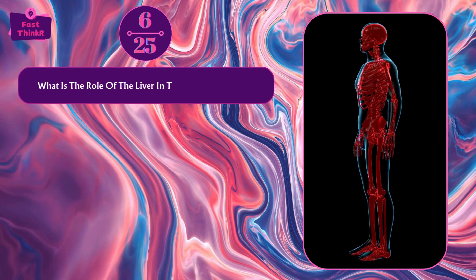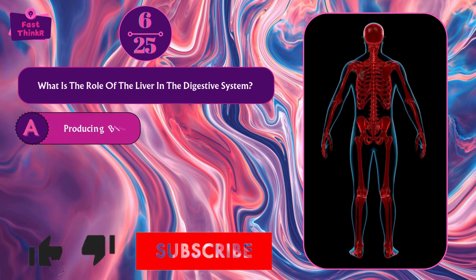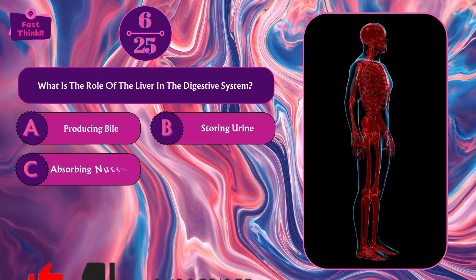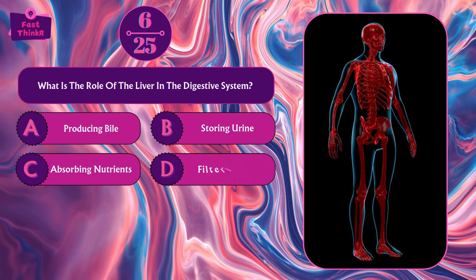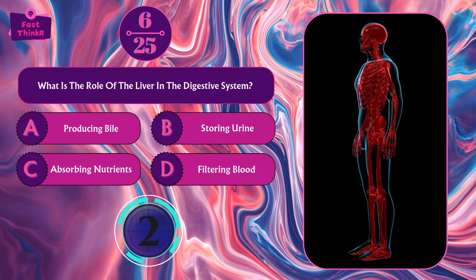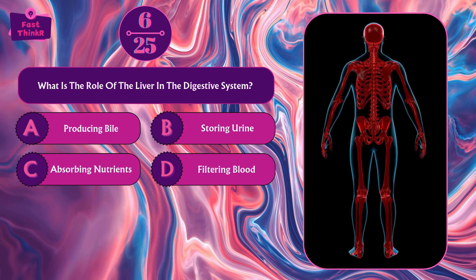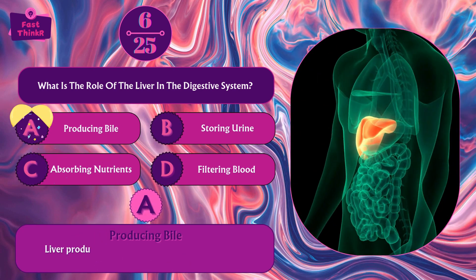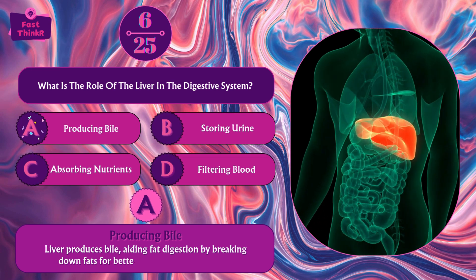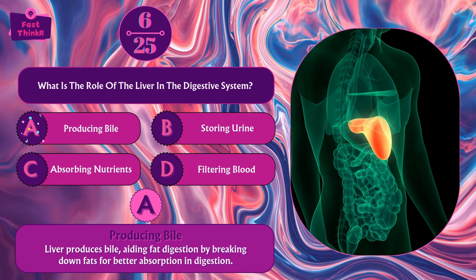What is the role of the liver in the digestive system? Producing bile, storing urine, absorbing nutrients, or filtering blood? Option A — producing bile. The liver produces bile, aiding fat digestion by breaking down fat for better absorption.